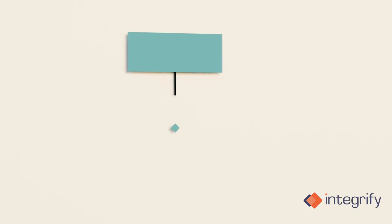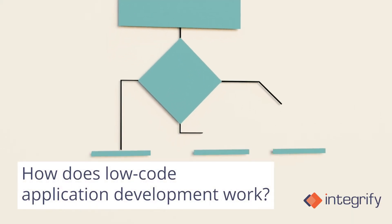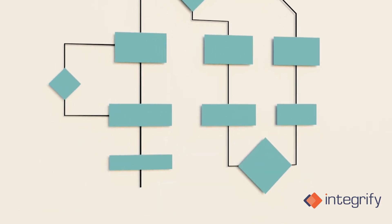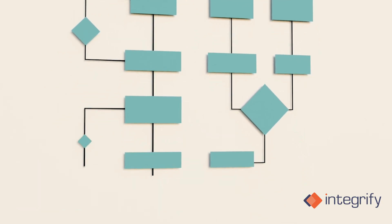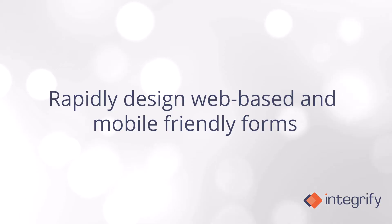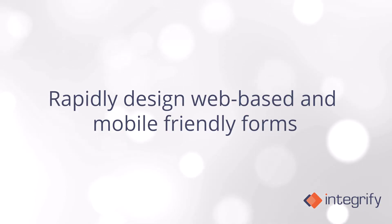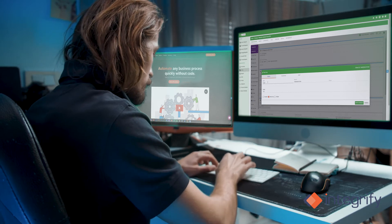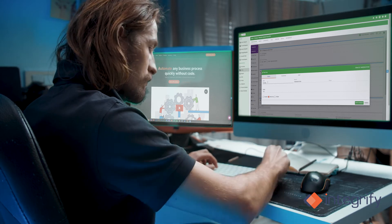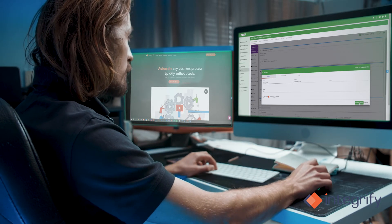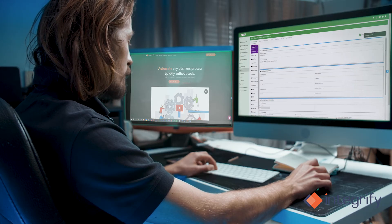How does low-code application development work? Let's dive into some ways that companies can use low-code development platform components within the enterprise. Rapidly design web-based and mobile-friendly forms. Form designers are drag and drop, allowing for custom layouts to simulate existing forms that could currently be on paper or in Excel documents.